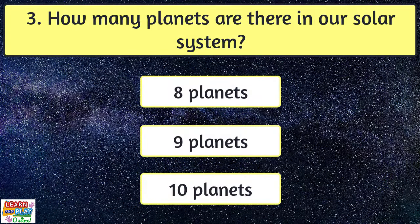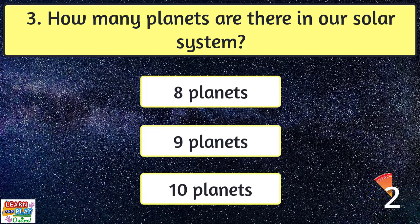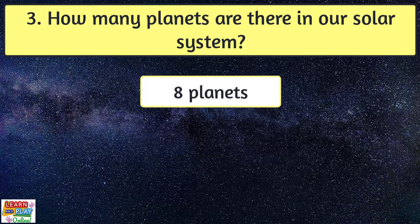Question 3. How many planets are there in our solar system? Eight planets.